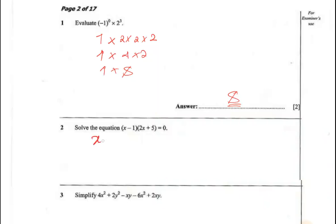So x - 1 = 0 and 2x + 5 = 0. x equals 1, and x equals negative 5 divided by 2. So x equals negative 2½. These are the two solutions.